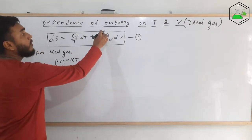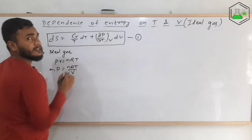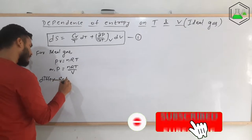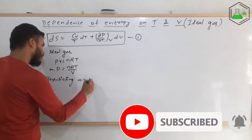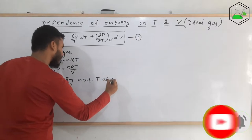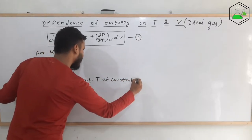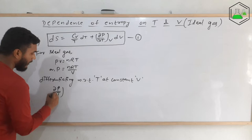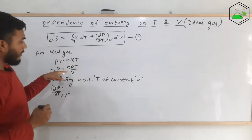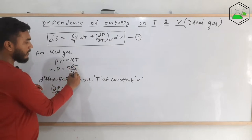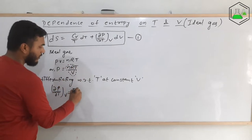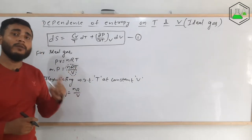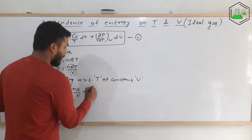Now let us find the value of (∂p/∂T)_V. For this, we need to differentiate p with respect to T at constant volume V. Differentiating p = nRT/V with respect to temperature at constant volume, the quantity nR/V behaves as a constant. Differentiating T gives 1, so (∂p/∂T)_V equals nR/V. This is equation number 2.